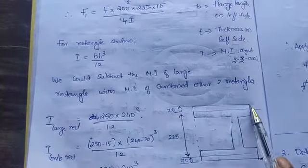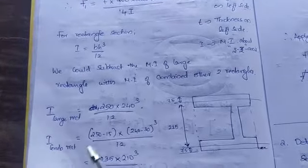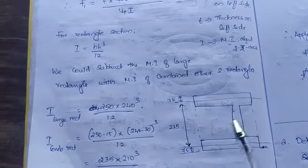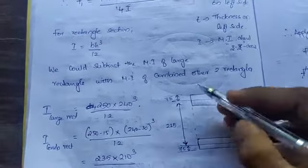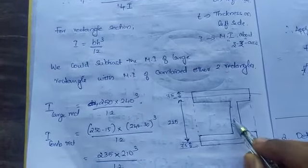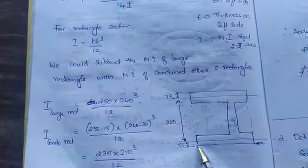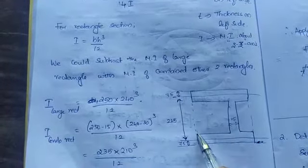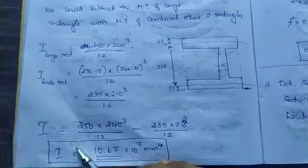These two are combined and taken. Since they are both rectangles, we'll do 250 minus 15 into the remaining length. Total is 240, with 15 reduced from each end, so 240 minus 30, the whole cube by 12. That's 235×210³/12. So moment of inertia is 10.67×10⁷.